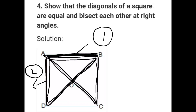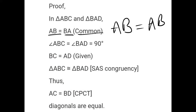Now let's see — angle ABC is equal to angle ABD. Why is it equal? Because we have a square. A square has the property that every angle is 90 degrees. It means that angle A equals angle B. So second, we can write angle ABC equals angle ABD, which is 90 degrees.